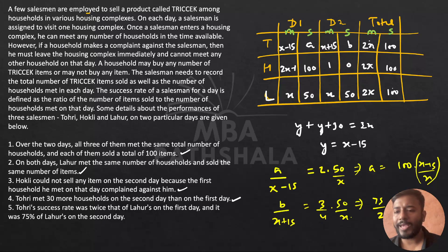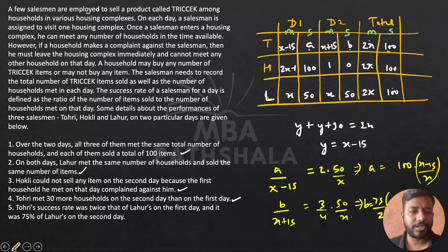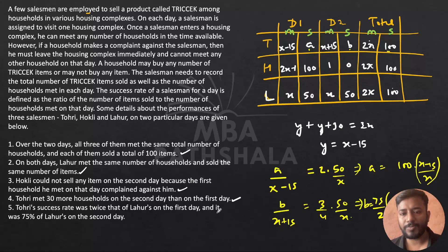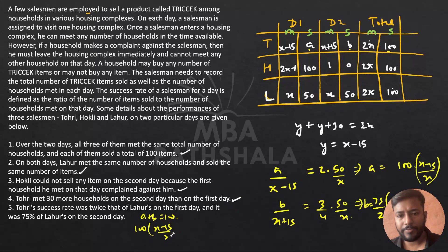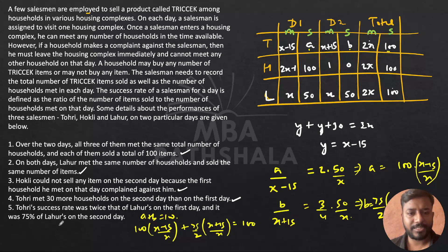Since a + b = 100, we substitute both expressions. Multiplying through by 2x (the LCM), we get: 200(x−15) + 75(x+15) = 200x. Expanding: 200x − 3000 + 75x + 1125 = 200x. This simplifies to 275x − 1875 = 200x, so 75x = 1875.